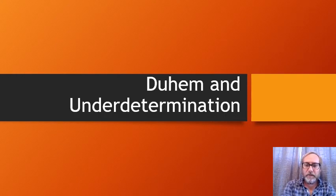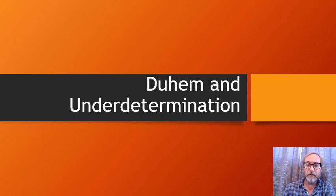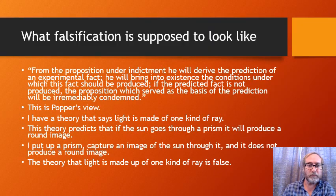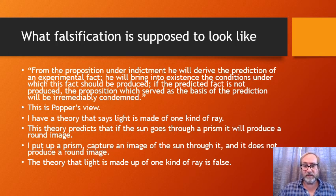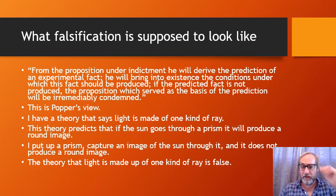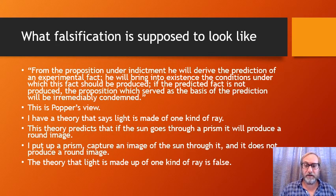This lecture is on Pierre Duhem, the Duhem problem, and underdetermination, and how that's a problem for Popper's account of science as falsification. Duhem basically sets up Popper's view: you have a theory, you make a prediction from it through logical deduction, you do an experiment and see if that prediction is true. If it's false, the theory is falsified — no induction required, just purely logical deduction.